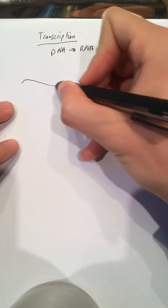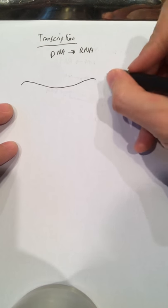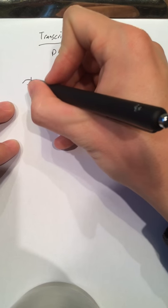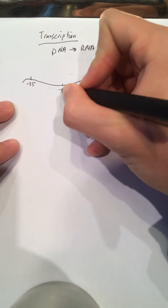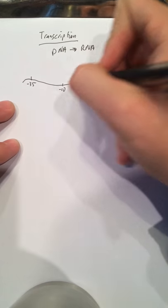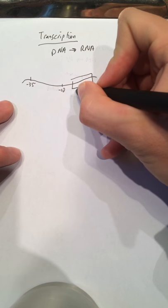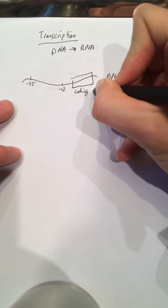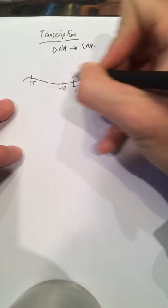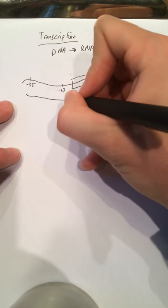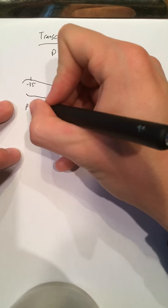So we're going to start off with a template strand of DNA. You're going to have a negative 35 to negative 10 region, a coding region, and the other region would be called the promoter region.